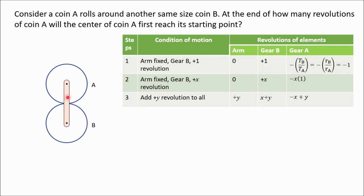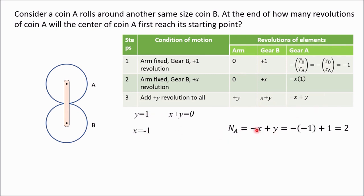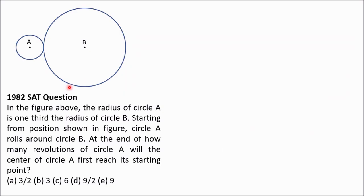Multiply throughout by x, then add y. The arm speed is y, speed of B is x+y, speed of A is −x+y. The arm makes one full rotation, so y = 1. Coin B is fixed, so x + y = 0, giving x = −1. Speed of A = −(−1) + 1 = 2. So when coin A revolves once around coin B, it rotates about its own axis twice.